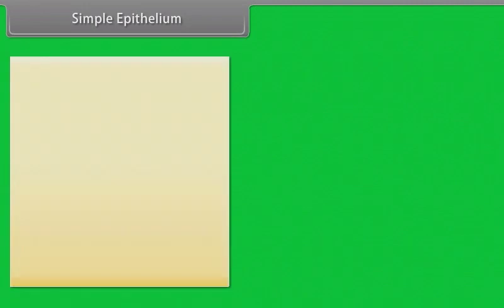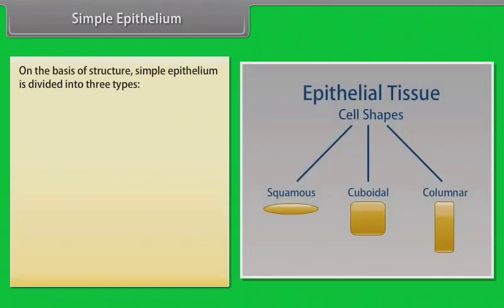Simple epithelium. On the basis of structure, simple epithelium is further divided into three types: squamous, cuboidal, and columnar.